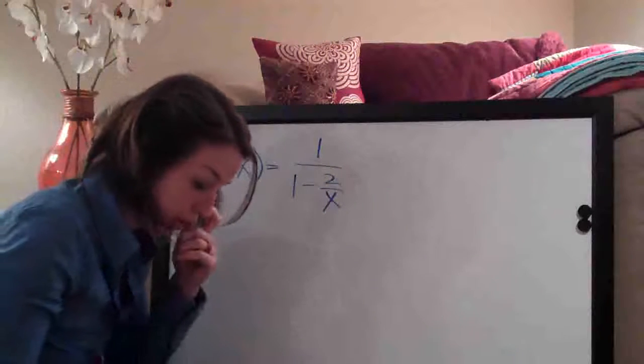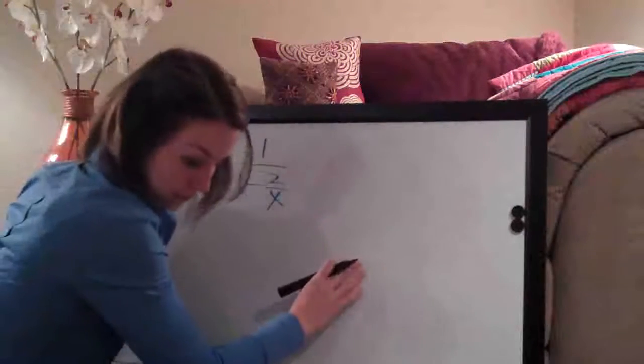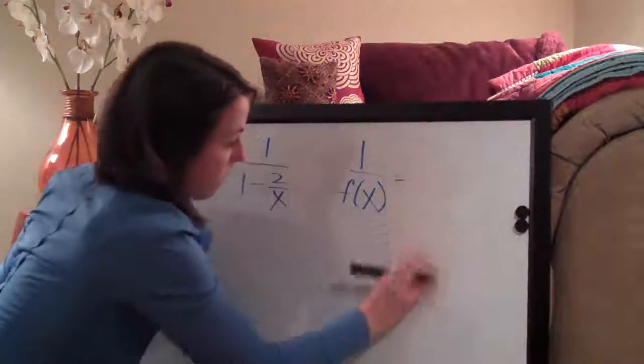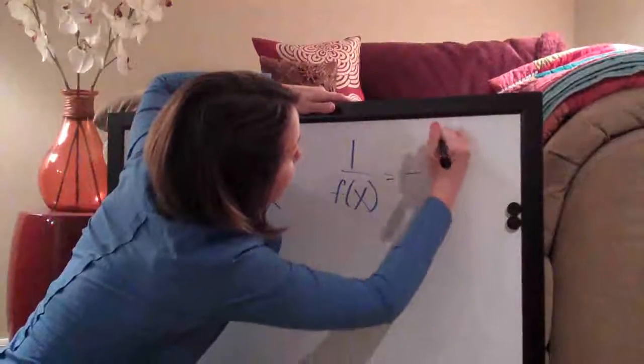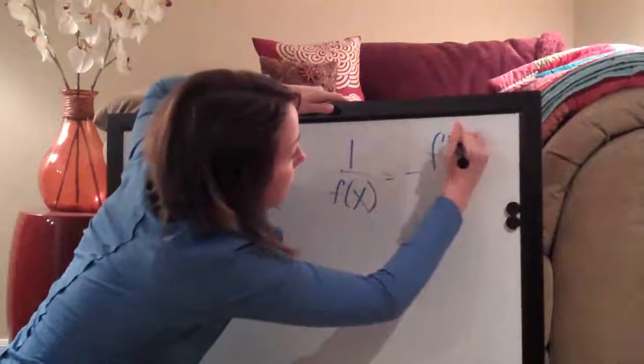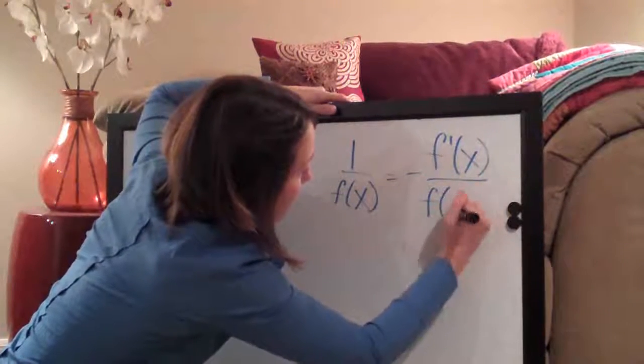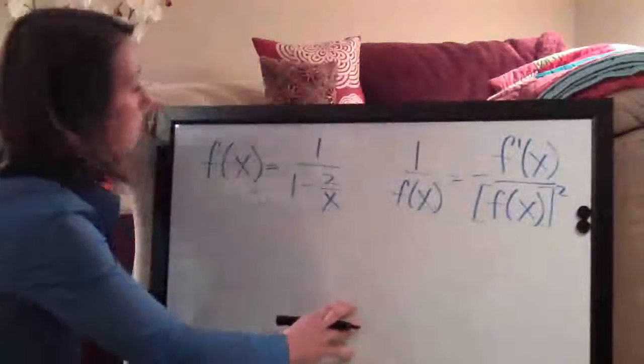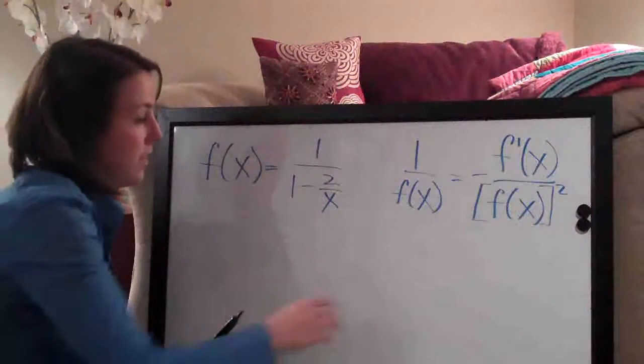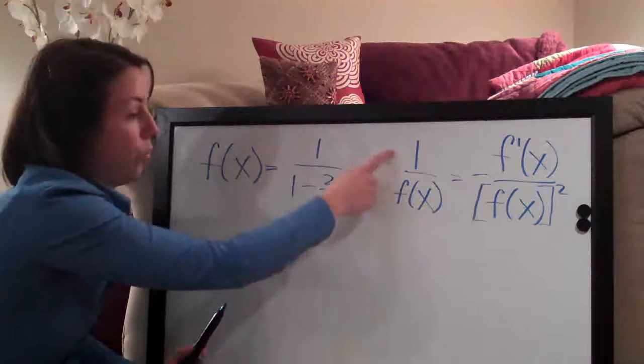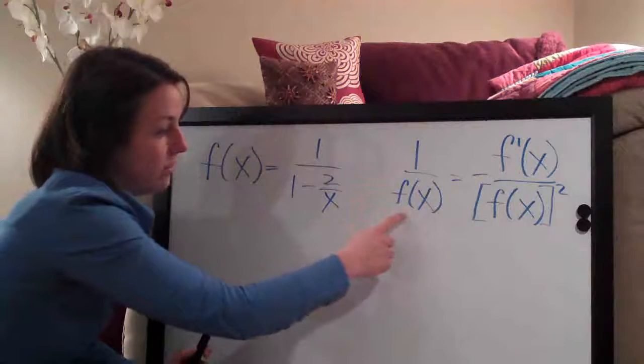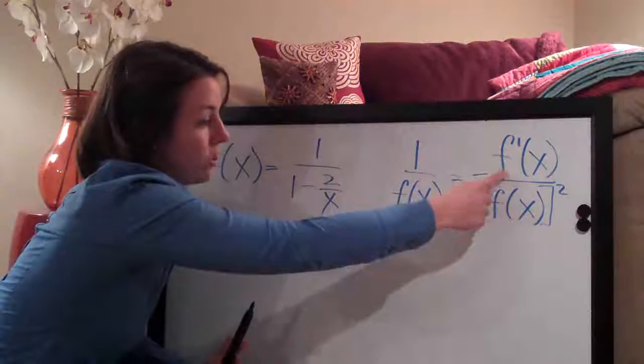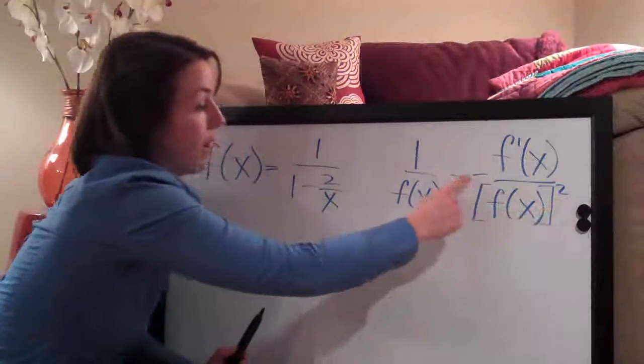And the reciprocal rule, we'll just write it out over here. So basically all the rule says is that if you are taking the derivative of a function that has 1 in the numerator and anything, f of x, in the denominator, that the result is going to be in the following form. The derivative of the function on the top, the function squared on the bottom with the negative sign in the front.